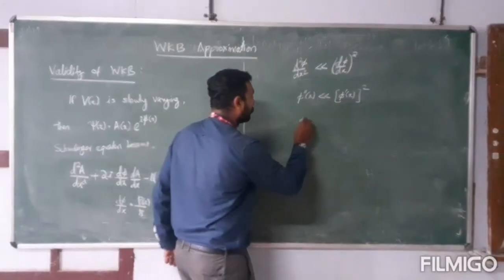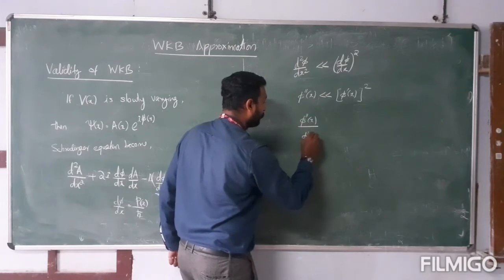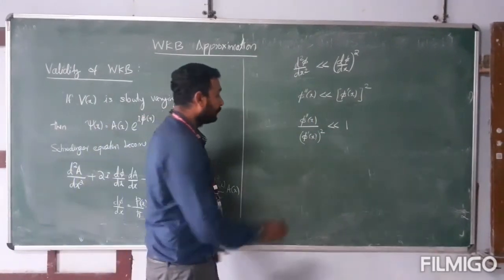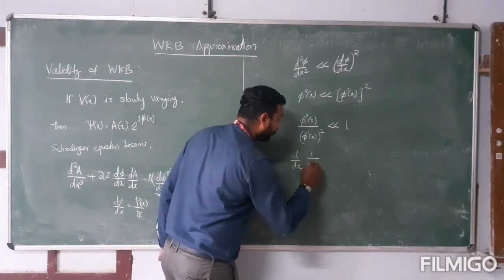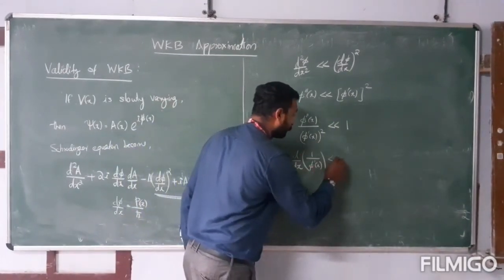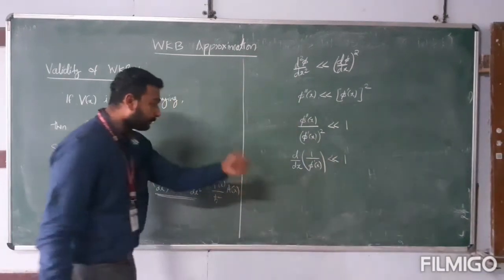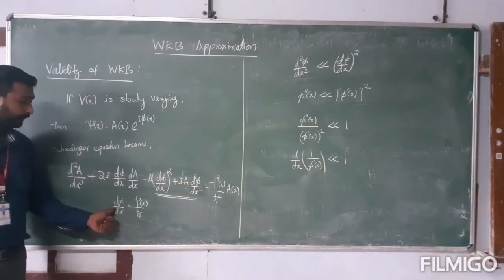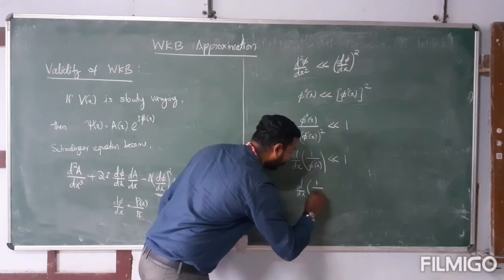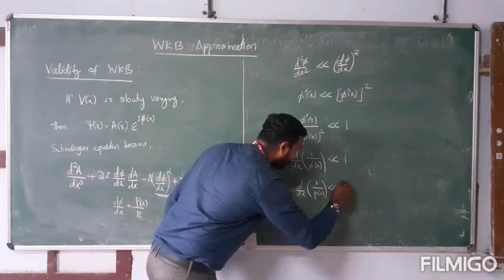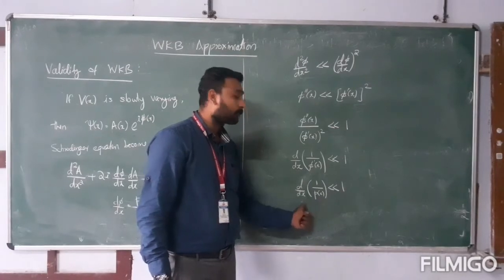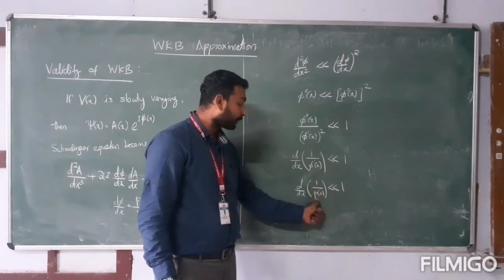We can write this as φ″(x) divided by φ′(x), all squared, must be much less than 1. This equation can be written as the derivative of 1 upon φ′(x) — so d/dx of 1/φ′(x) — must be much less than 1. Now what is φ′(x)? The first derivative of phi squared is related to momentum. So in other words, d/dx of 1 over the momentum of the particle must be much less than 1, meaning the reciprocal of the momentum must be slowly varying.